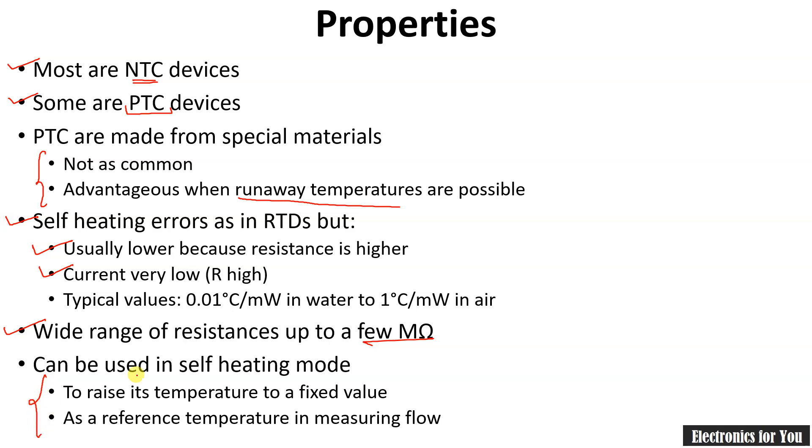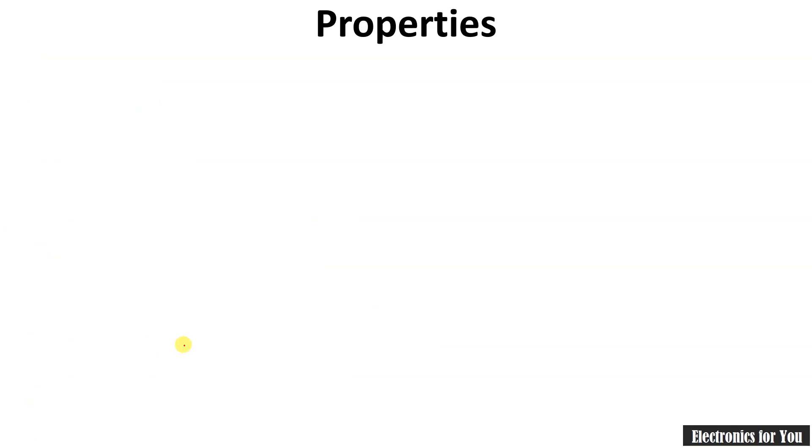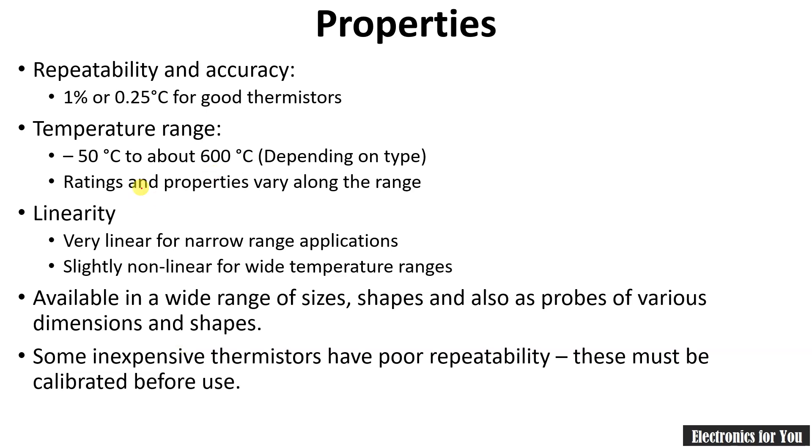Repeatability and accuracy is very high, that is 1% or 0.25°C. Temperature range is also important - you can see here it depends on which type of thermistor we are using. For semiconductor, the range is generally low.